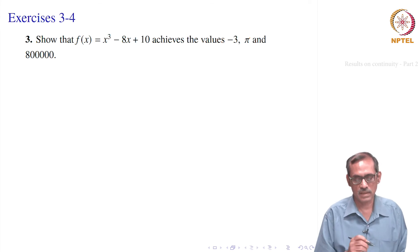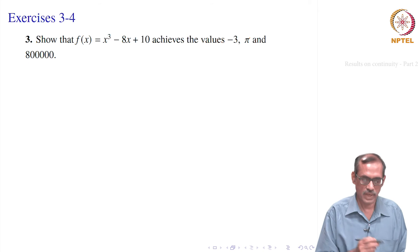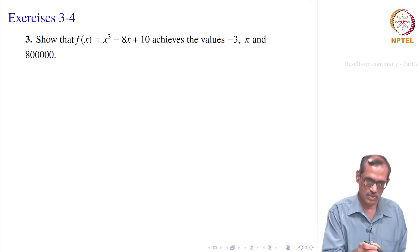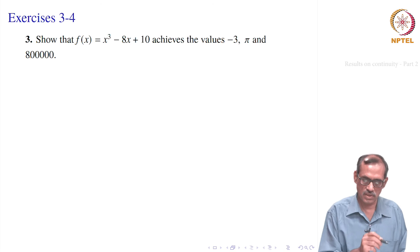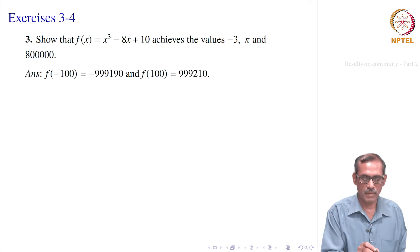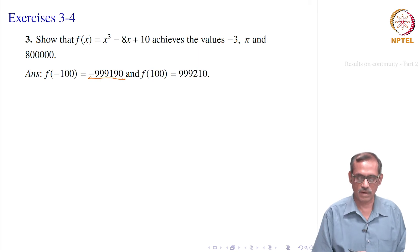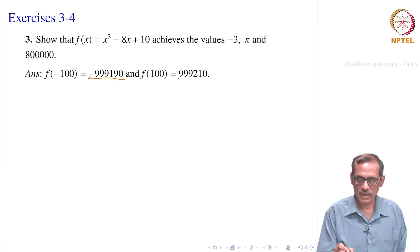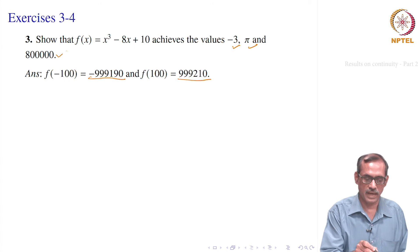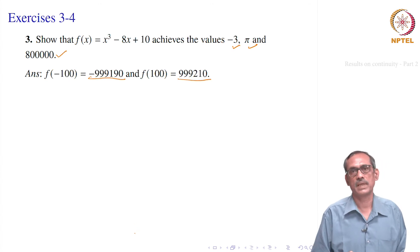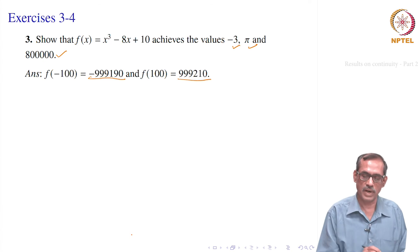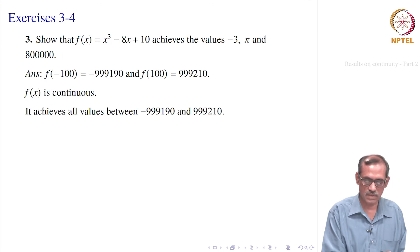However, if you want a better argument, we can give it explicitly. Since 800000 is a 6-digit number, let us start with 100: 100³ will be bigger than that. So evaluate f(−100) and f(100) using a calculator. All the numbers −3, π, and 800000 lie between these two values. Therefore, by the Intermediate Value Theorem, since f is continuous, there are points a, b, c such that f(a) = −3, f(b) = π, and f(c) = 800000.